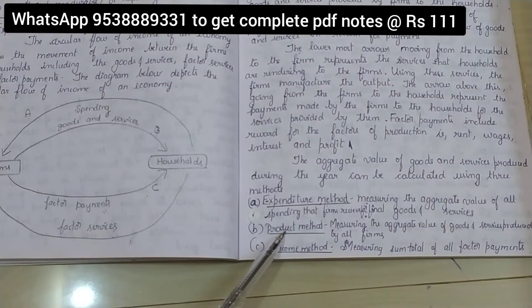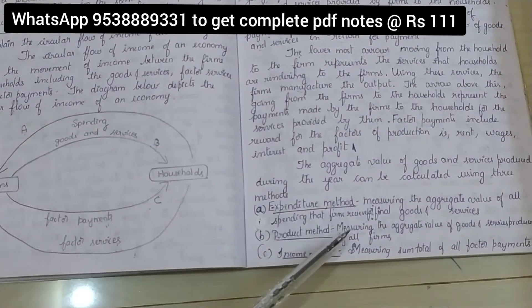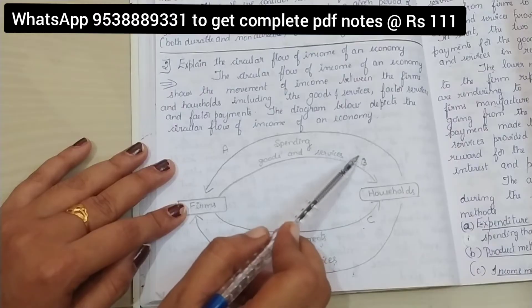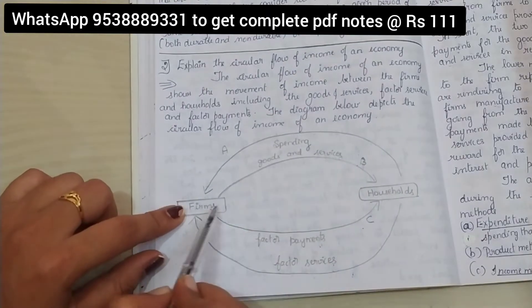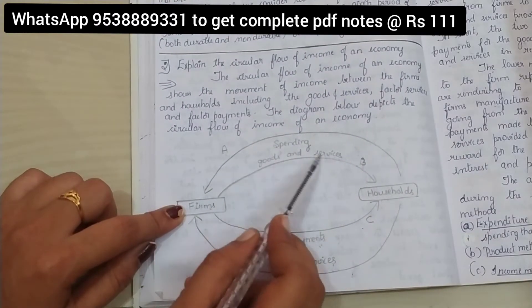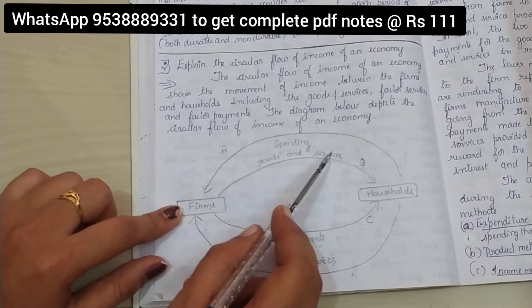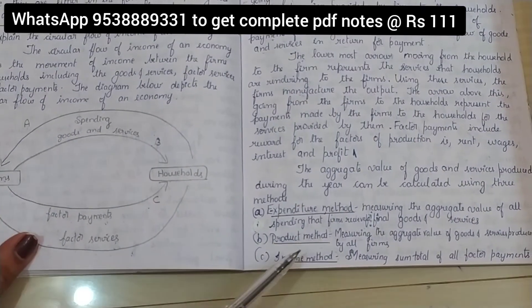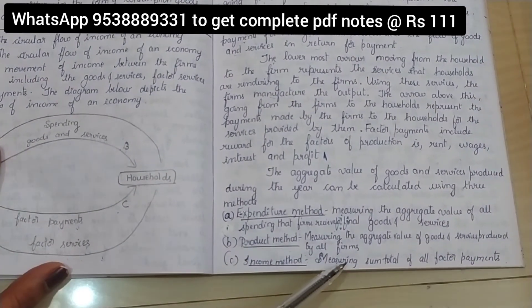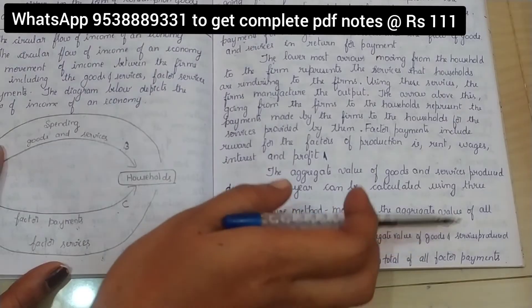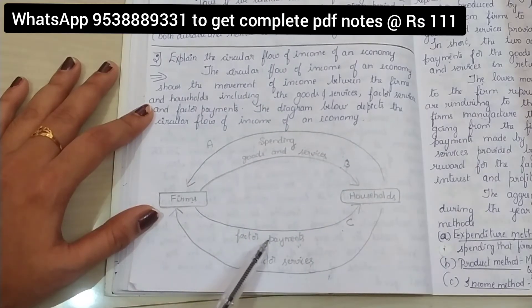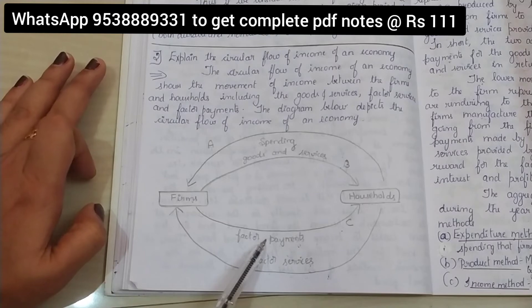The second method is the product method — measuring the aggregate value of goods and services produced by all firms. The third method is the income method — measuring the total of all factor payments. Firms make payments to the households — factor payments including interest and wages.